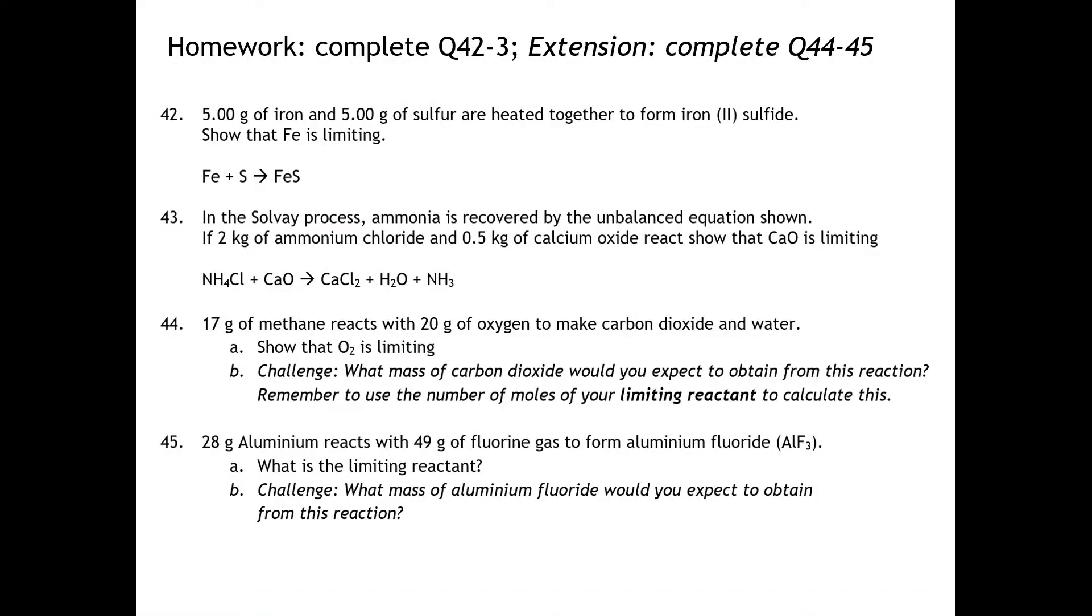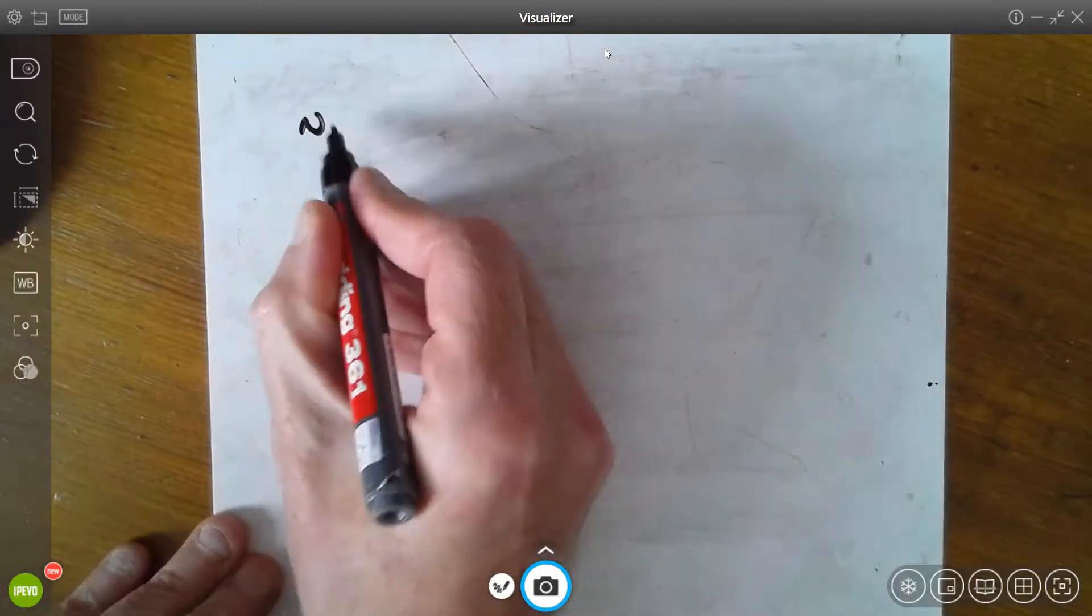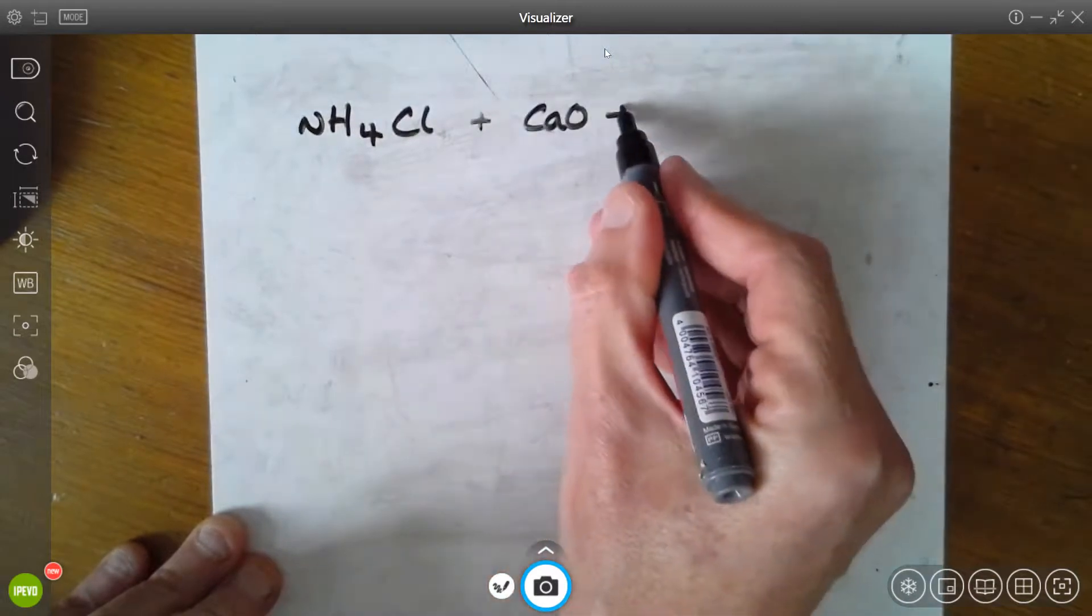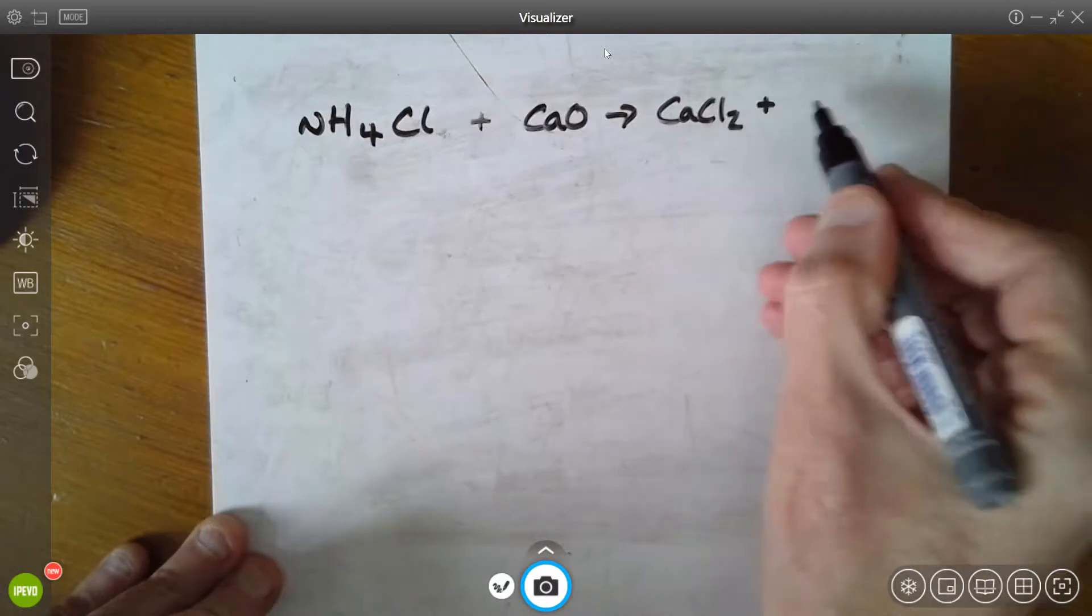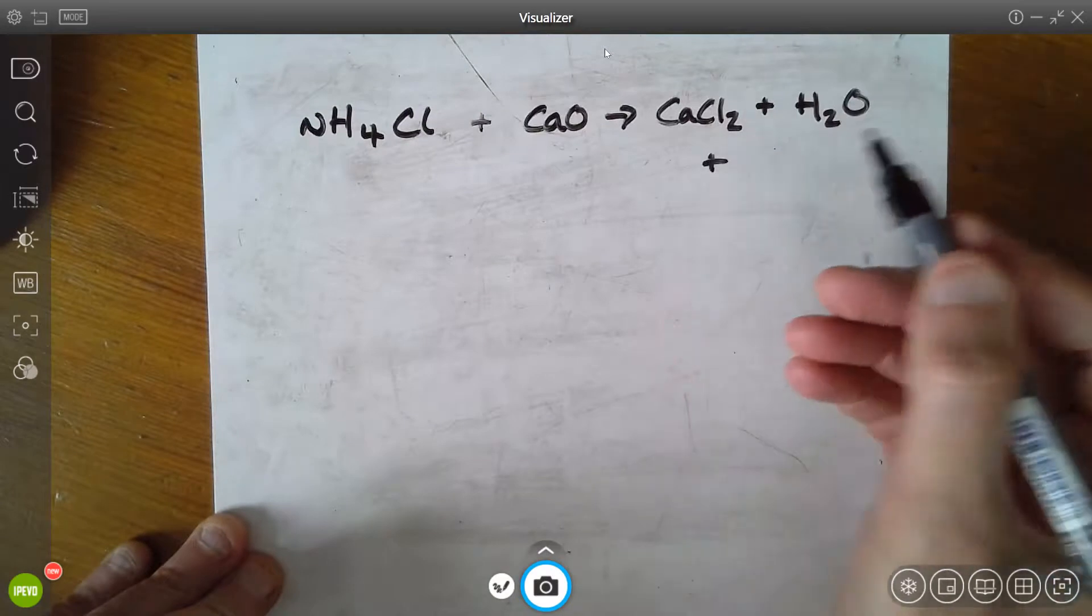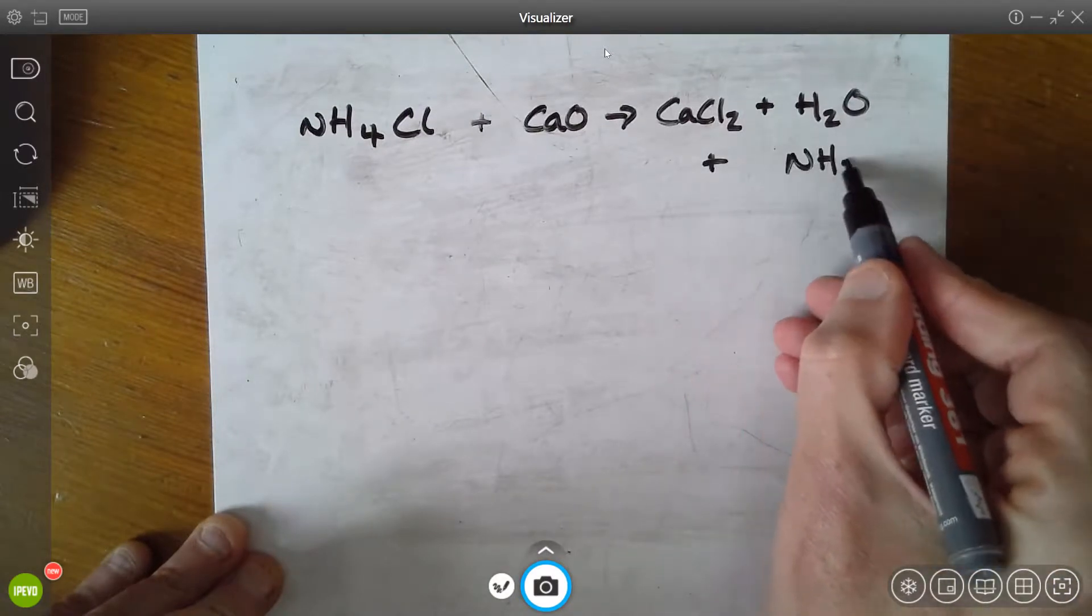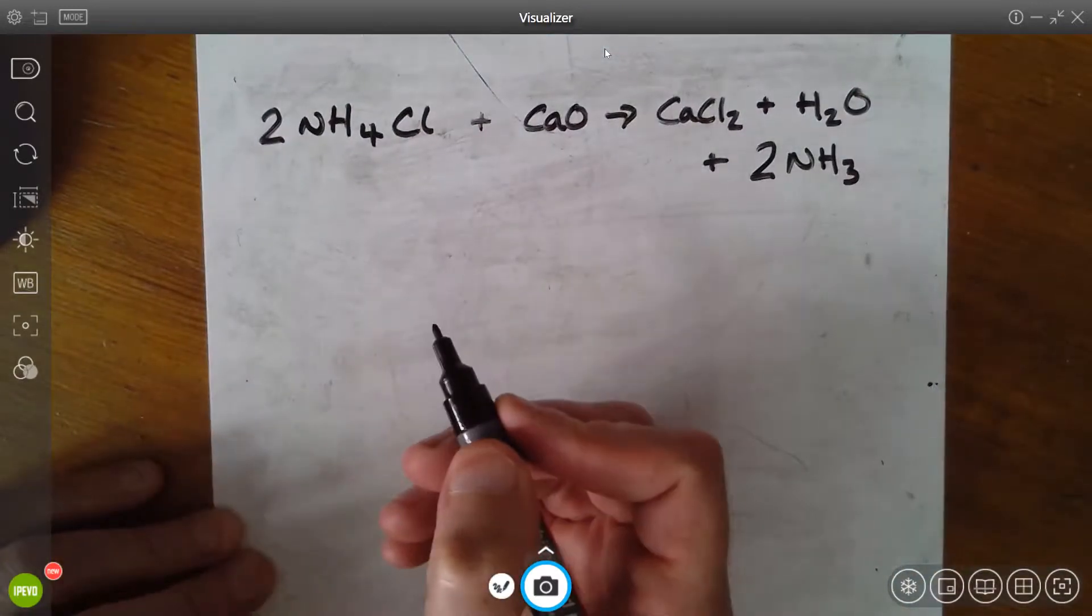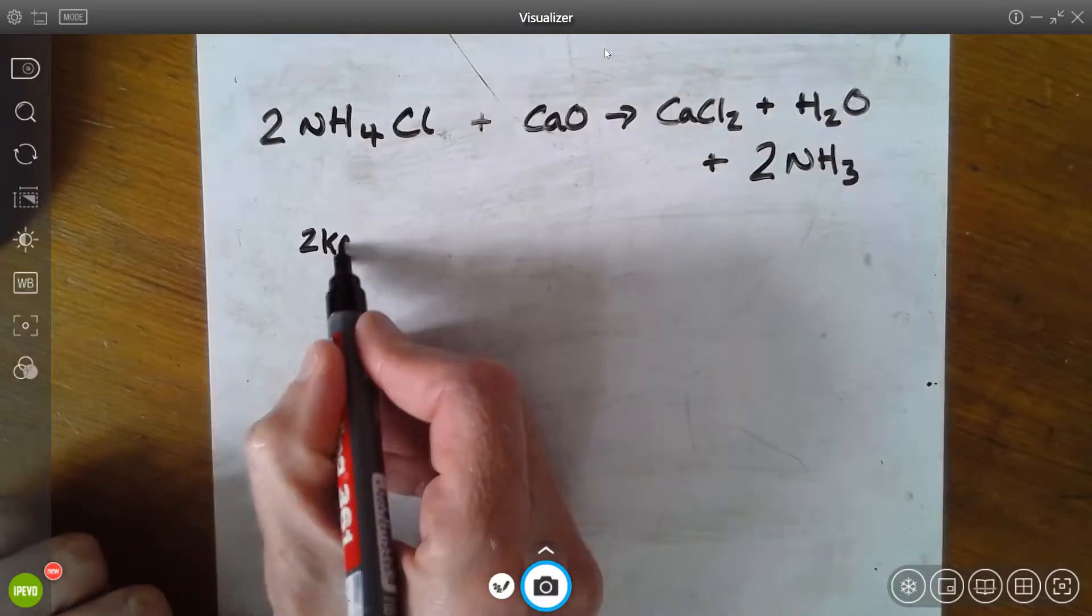Let's have a look back at question 43. The Solvay process—this is a particular chemical reaction named after the person who developed it. Ammonia is recovered by the unbalanced equation shown. If two kilograms of ammonium chloride and 0.5 kilograms of calcium oxide react, show that the mass of calcium oxide is limiting. So already we've got some clues—this is unbalanced. So let's go to our unbalanced equation. Here we have ammonium chloride with our calcium oxide and that's going to form calcium chloride plus H2O, and also produce ammonia. Now hopefully you recognize that we can balance this fairly simply like this, and then we refer to our masses to work out the number of moles.